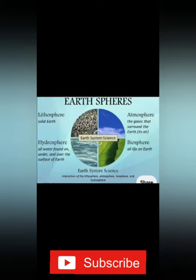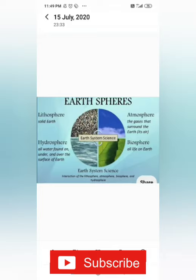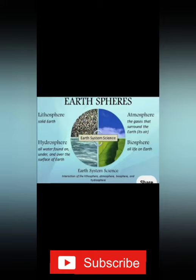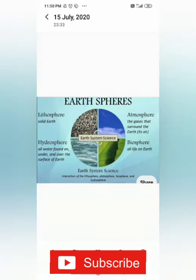Next we will talk about the atmosphere. The word 'atmo' means air in Greek. The atmosphere is the envelope of air that surrounds the earth. Different types of gases make up the atmosphere. The major gases are nitrogen at 78% and oxygen at 21%. The other gases like carbon dioxide, hydrogen, helium, argon, and ozone are also present in the atmosphere.